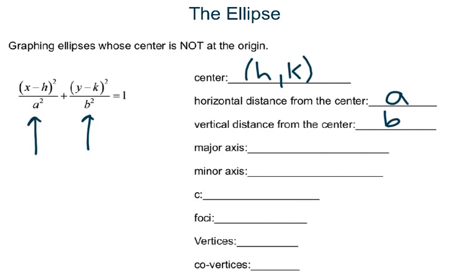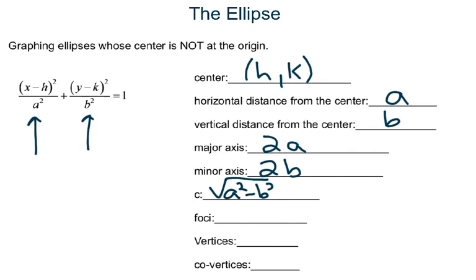Your major axis, therefore, is going to be the distance of 2a. And your minor axis is going to be the distance of 2b. Now c — that's your one focus — the formula stays the same: c is equal to the square root of a squared minus b squared.